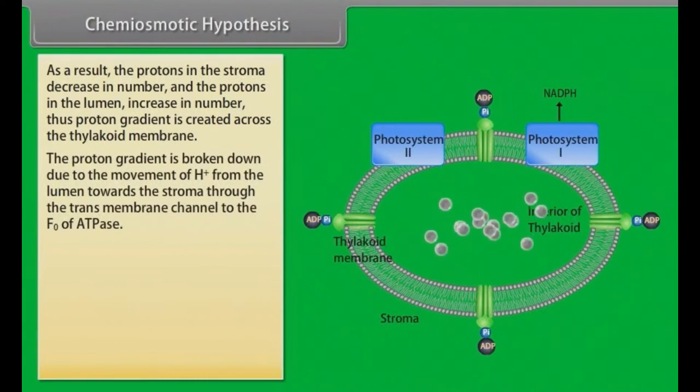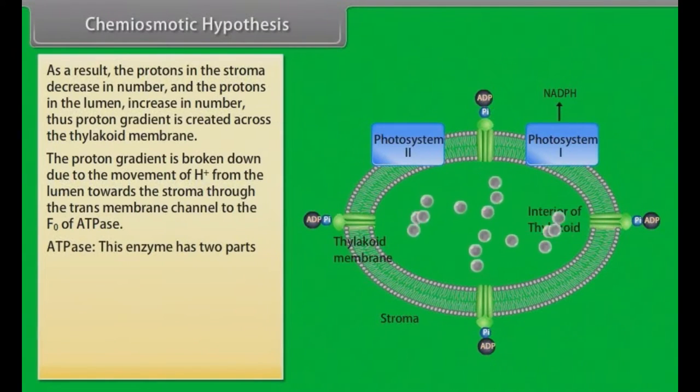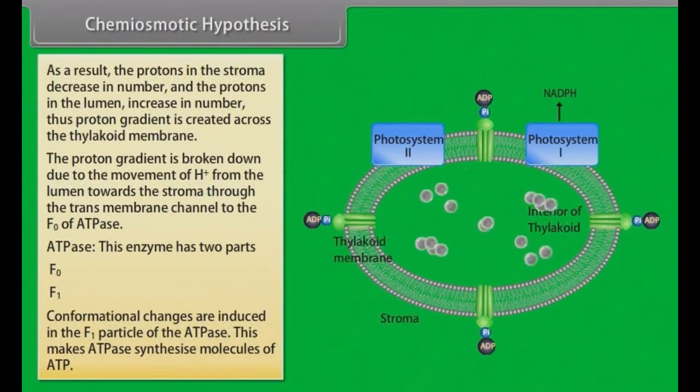The proton gradient is broken down due to the movement of H+ from the lumen towards the stroma through the transmembrane channel to F0 of ATPase. This enzyme has two parts: F0 and F1. Conformational changes are induced in the F1 particle of the ATPase. This makes ATPase synthesize molecules of ATP.